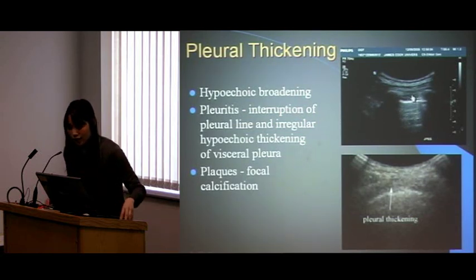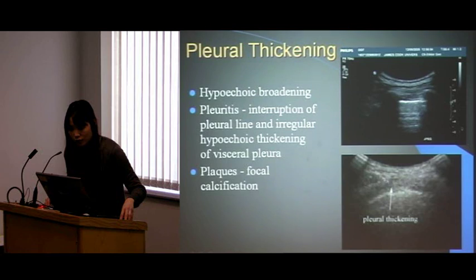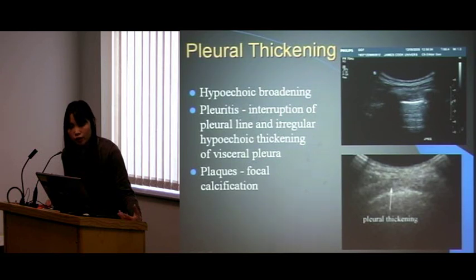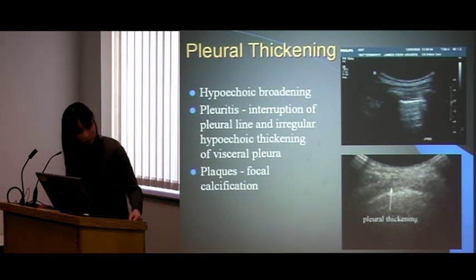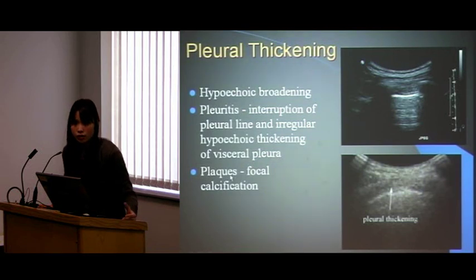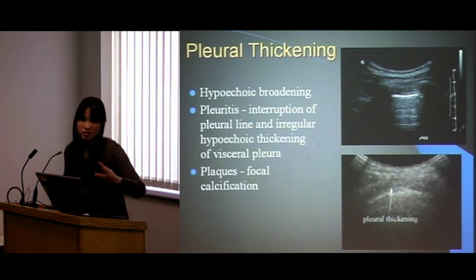Pleural thickening is hypoechoic broadening where the pleura is supposed to be — just thick and black. Here you can see the normal bright line, and between the soft tissue and pleura there's this area of blackness that really shouldn't be there. For pleuritis — from rheumatoid arthritis or other inflammation — you get an interruption of the pleural lines. For patients exposed to asbestos, you might get plaque thickening, which may or may not calcify.